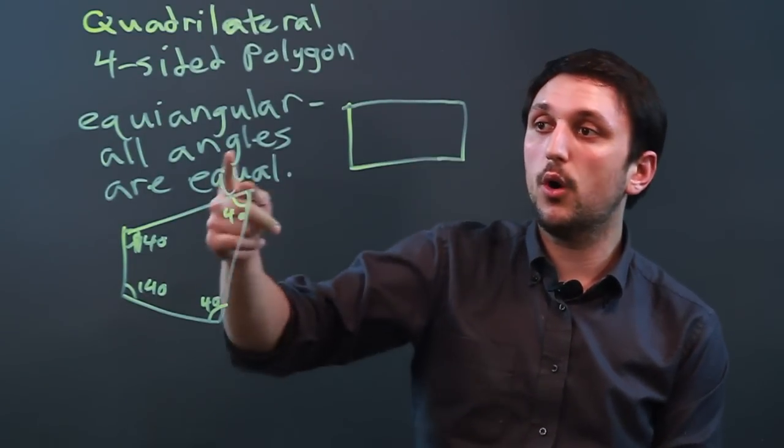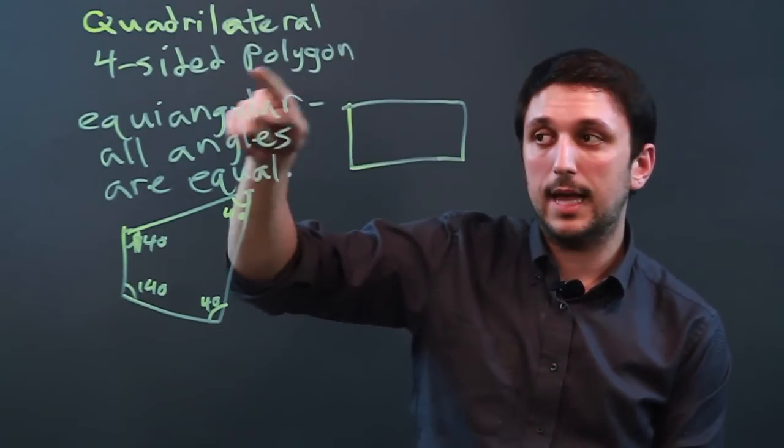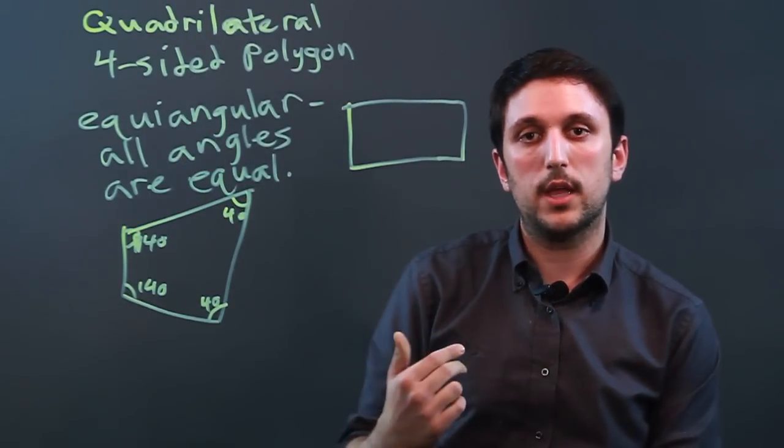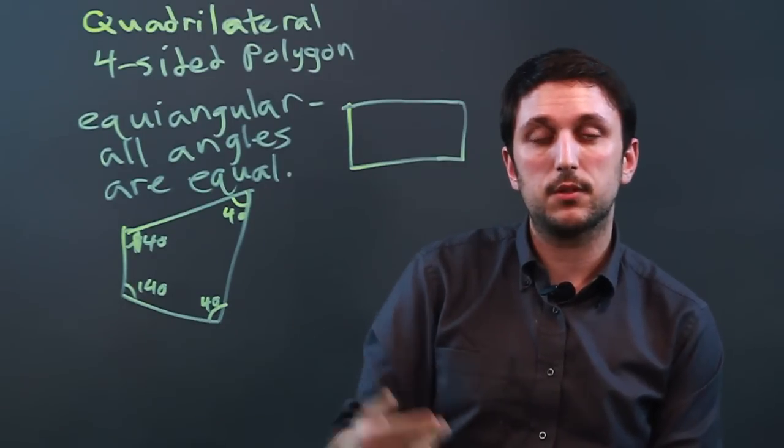So really, only rectangles have to be equiangular if they're quadrilaterals. All other quadrilaterals do not necessarily have to be equiangular.